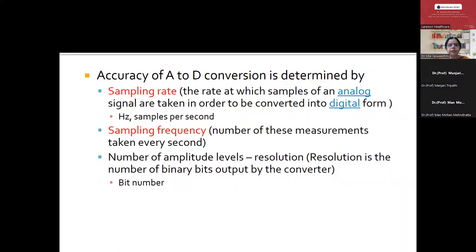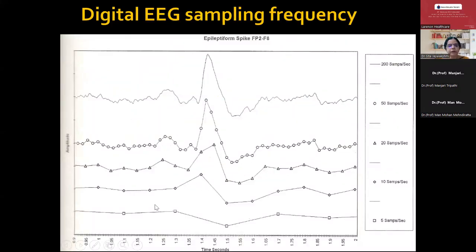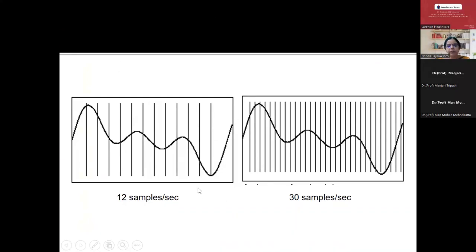Sampling rate is the rate at which the sample of the analog signal is taken to convert to digital form, whereas sampling frequency is the number of measurements taken every second. The sampling rate should always be high. If the sampling rate is very low — at five samples per second — the graph is very poor. At 200 samples per second, we can see real-time recording of EEG activity as well as slow wave activity. Hence the sampling rate should be high — the more the sampling rate, the better the waveform.